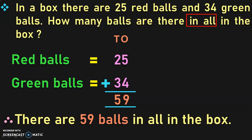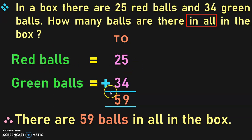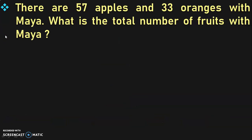Dear viewers, you have understood how to solve a story sum. First, you read the story sum. You identified the keywords. You wrote down the statements. Performed the mathematical operation of addition on the given numbers. And then wrote down the answer. These are the steps to be followed for solving a story sum. Let us move on to the next example.